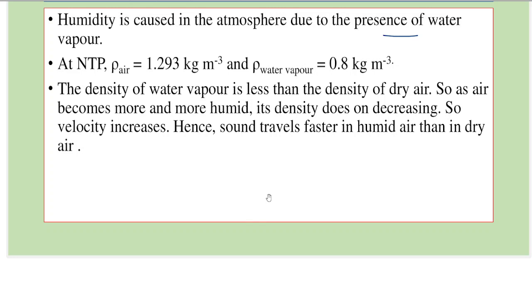Because of which, the density of air will not be the same. Density of dry air is 1.293 kg per meter cube, meaning when it's dry air, the amount of water vapor would be minimal or very very less. And the density of water vapor is 0.8 kg per meter cube.